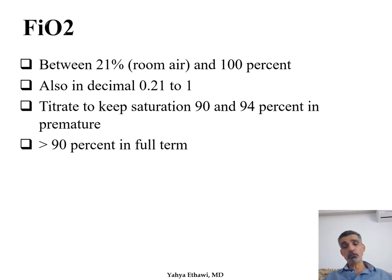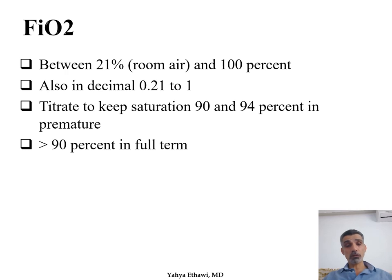I know some nurses and physicians easily keep turning up the FiO2. But remember: if you need FiO2 more than 30% for more than 15 minutes, then probably something is either wrong with your setting parameters or the disease process of the baby has changed and you need to reassess. If more than 40%, it's a very serious warning. Don't keep pushing it up — although temporarily you might increase FiO2 to give yourself time to assess, don't go beyond 15 minutes.